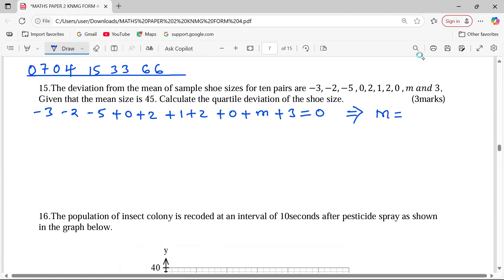So I take negative 3, negative 2, negative 5, then we have a 0, a positive 2, a positive 1, a positive 2 once again, and a positive 3. So I'm getting negative 2, but I have to take them to the right-hand side, whereby m becomes positive 2. So the value of m is a positive 2.